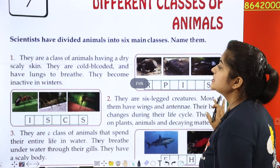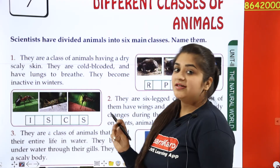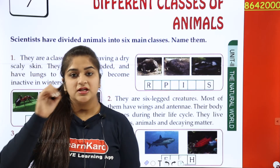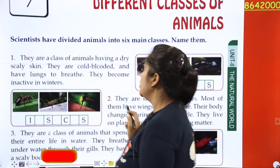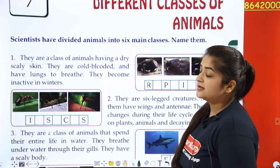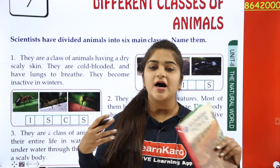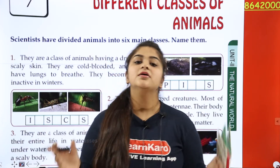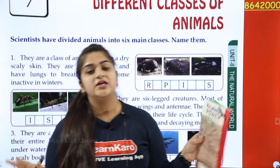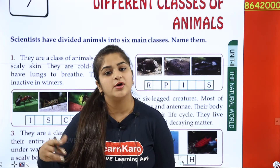The first class of animals has a dry, scaly skin. These animals have scales on their skin. They are cold-blooded and have lungs to breathe. Cold-blooded means that these animals change their body temperature according to their surrounding environment — wherever they live, whatever the temperature is, their body temperature changes accordingly.